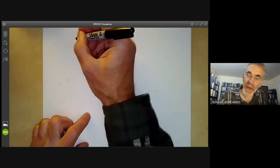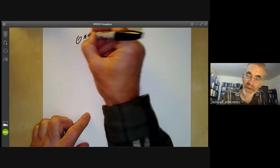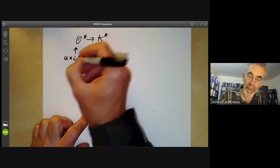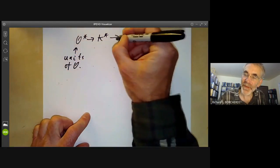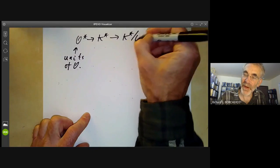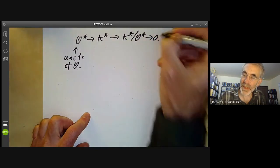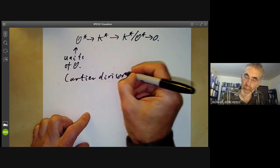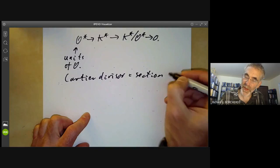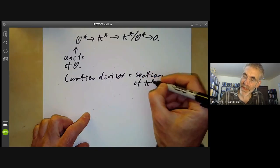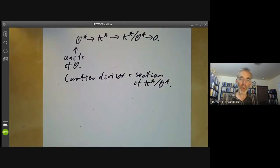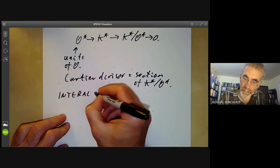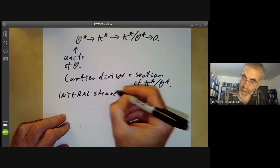Then this sheaf has a sub-sheaf O star goes to K star, where this is just the units of O. This gives us a quotient sheaf K star over O star goes to zero. And a Cartier divisor is just a global section of K star over O star. What does this mean for integral schemes?